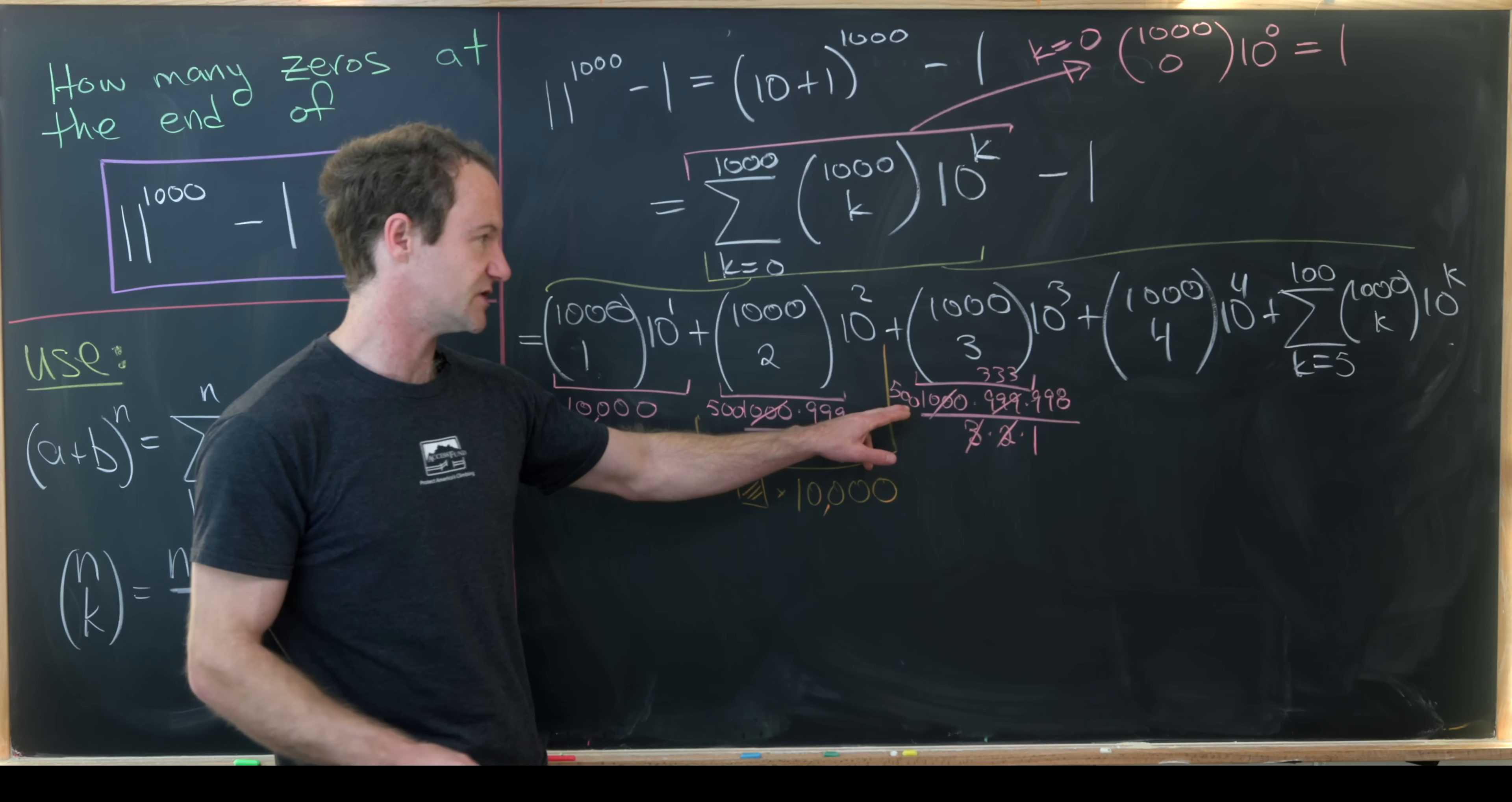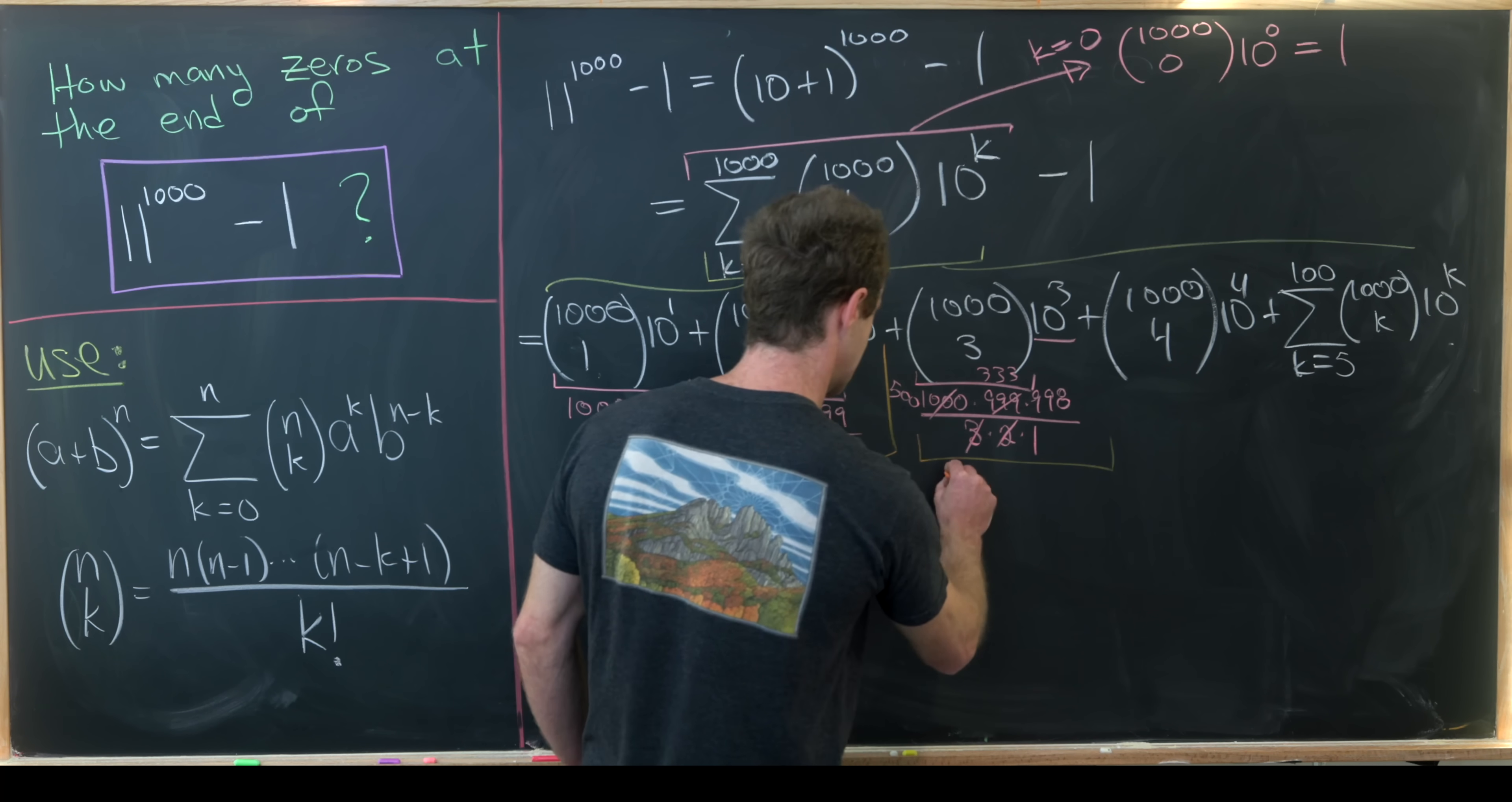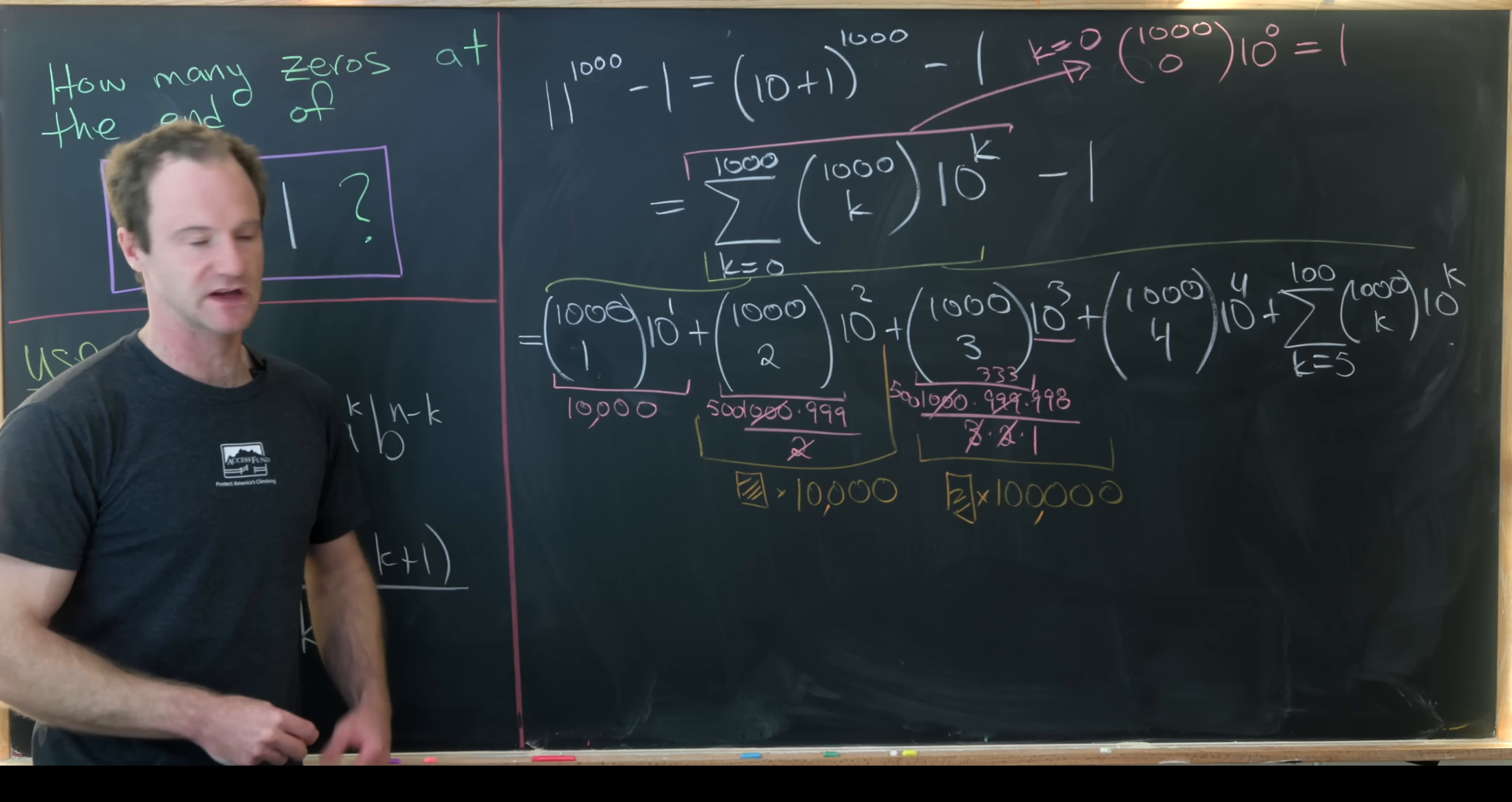So putting this number that ends in two zeros together with 10 cubed we'll see that we get a number that ends in five zeros. So here we have this is again some number times 1,000,000. So now we're ending in five zeros instead of four zeros like we did here.